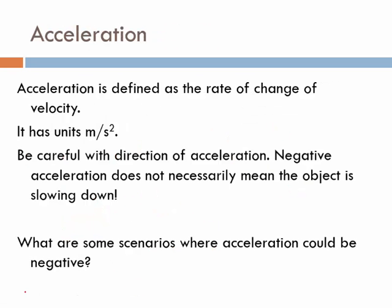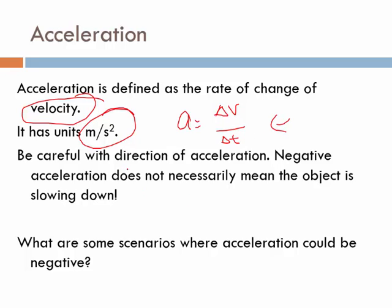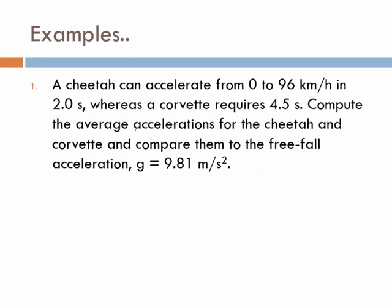Let's talk about acceleration now. Acceleration is the rate of change of velocity. Its units are meters per second squared, and its formula is change in velocity over time. Always remember to be careful with the direction of acceleration. Negative acceleration doesn't necessarily mean that the object is slowing down. I want you to think of some scenarios where acceleration could be negative but not necessarily going slower, and I'll ask you that in class tomorrow.